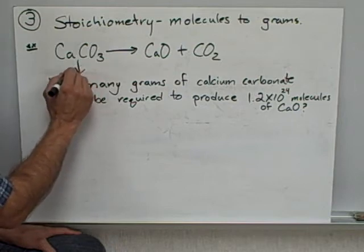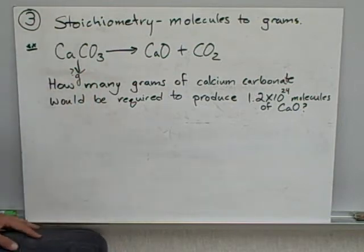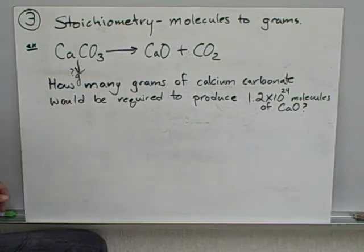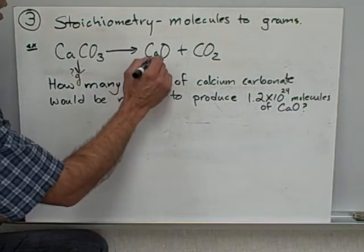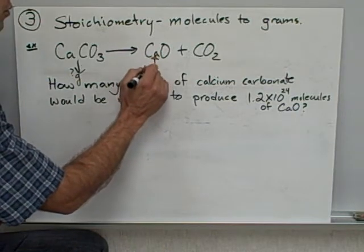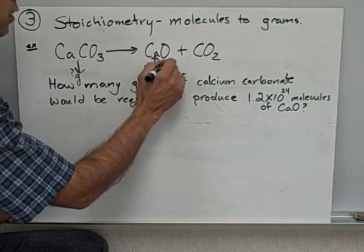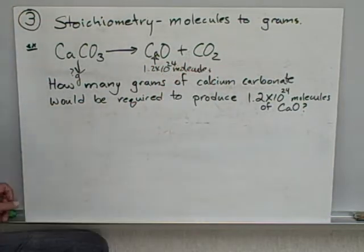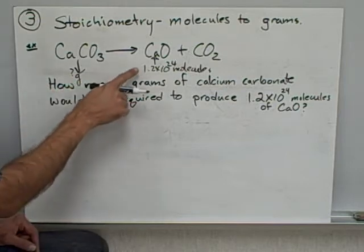Stoichiometry molecules to grams. In this case we're going to figure out how many grams of calcium carbonate would be required to produce 1.2 times 10 to the 24 molecules of calcium oxide. So I've got 1.2 times 10 to the 24 molecules of this. So I'm going to go here. Here's my steps.